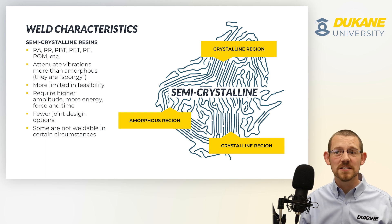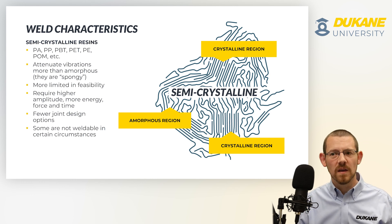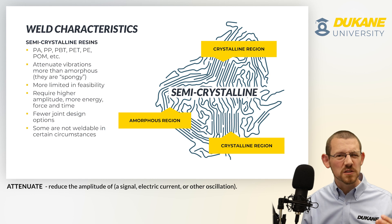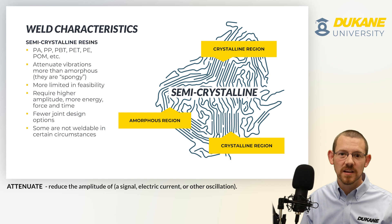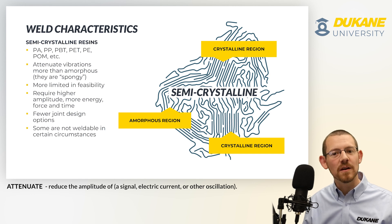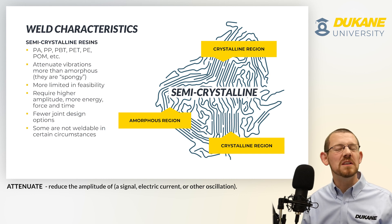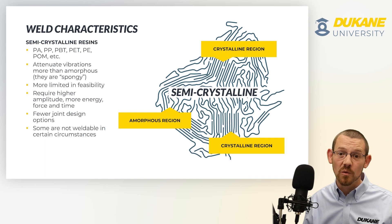Semi-crystalline resins, on the other hand, are a little more difficult. These are things like nylon, polypropylene, PBT, PET, polyethylene. Semi-crystalline resins, when you touch them, are softer — especially if they're unfilled, almost spongy. This behavior means they attenuate and absorb ultrasonic vibration, making them more difficult to process since we lose energy in our welding process. As a result, parts in semi-crystalline resins have more limited feasibility and generally require higher amplitude, more energy, more force, and longer weld times.